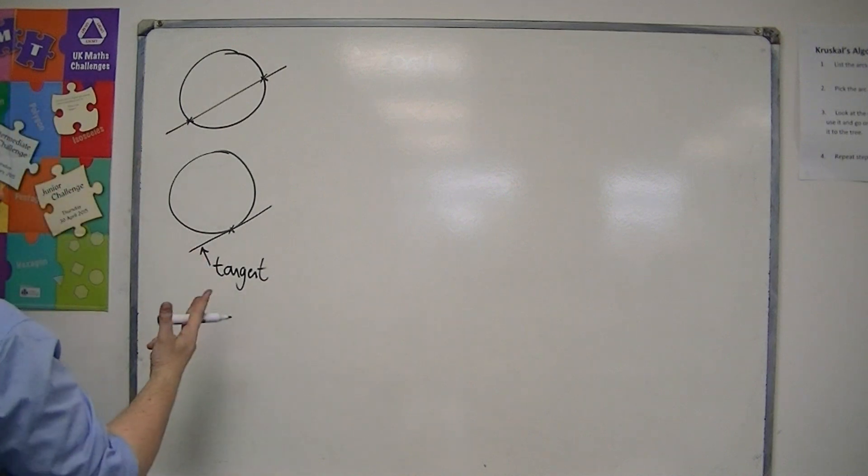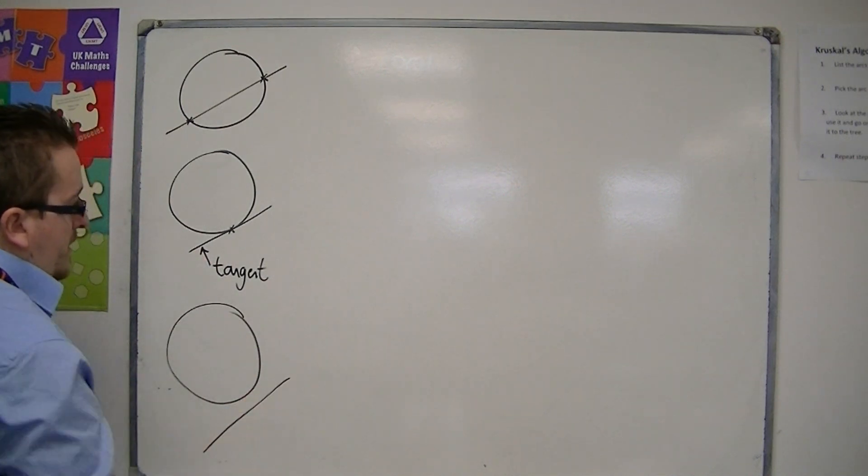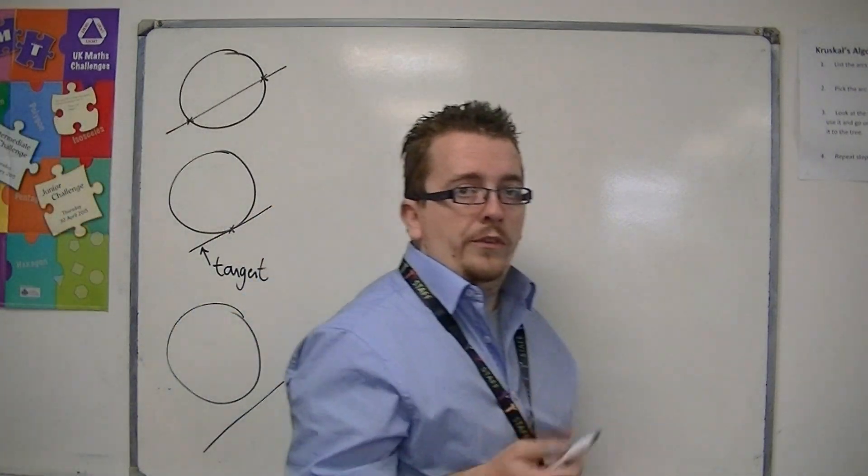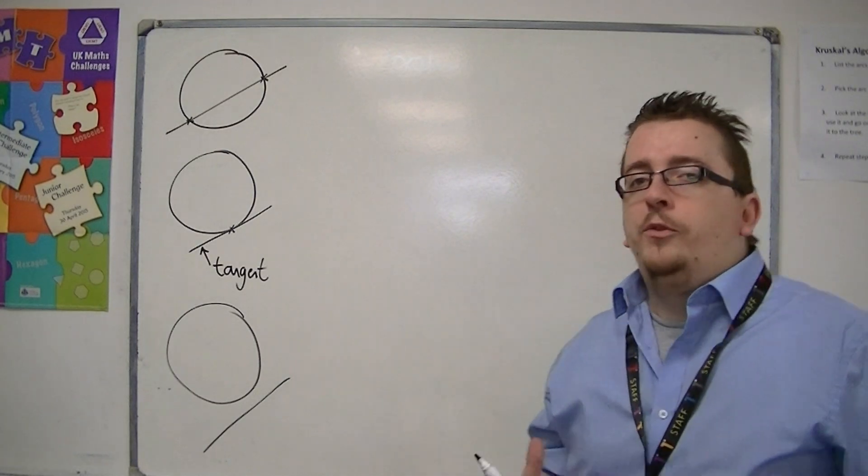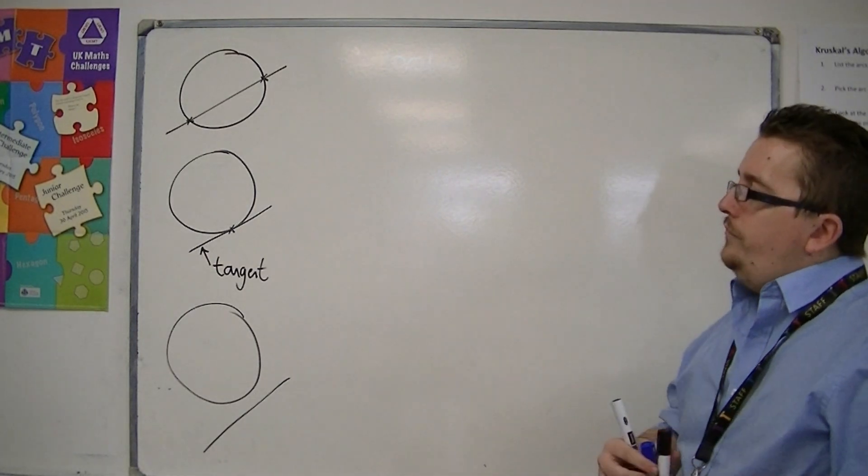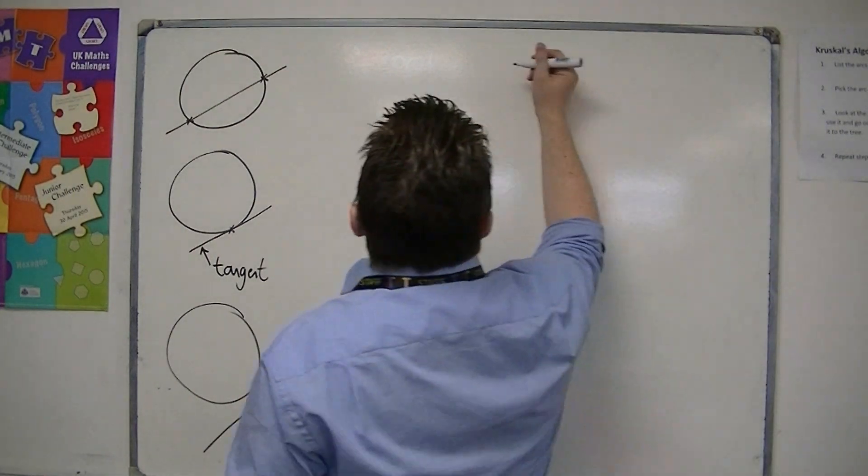Or the third possibility is that you have a circle and the line completely misses the circle. So these are three situations which we need to be able to identify.